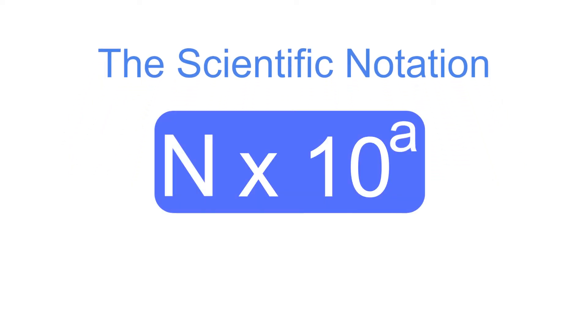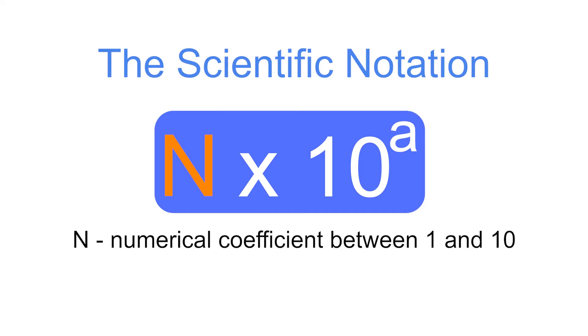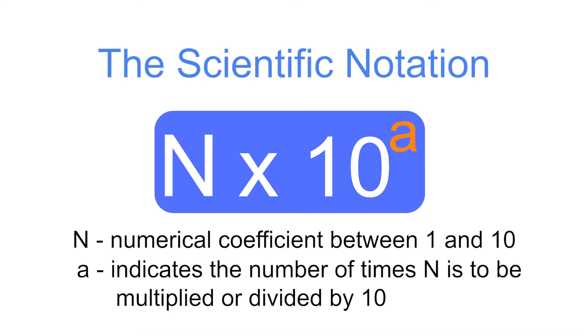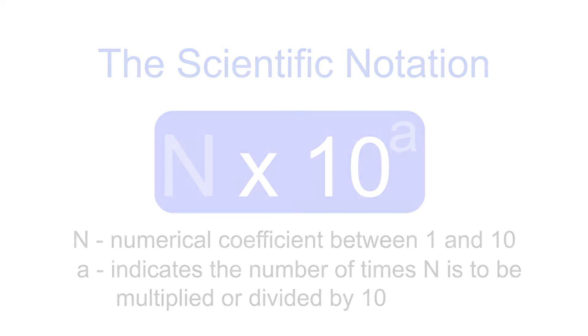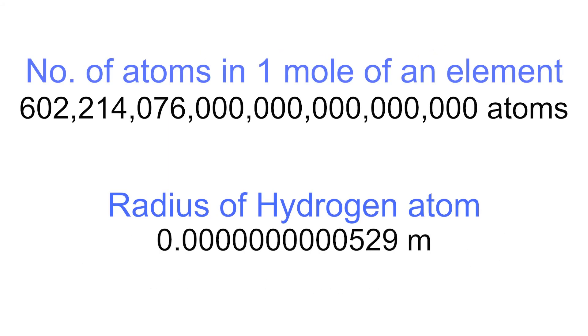A scientific notation is expressed in this format: n times 10 raised to a, where n is the numerical coefficient between 1 and 10, and a is the power of 10, which indicates the number of times the coefficient is to be multiplied or divided by 10. Here is an example.